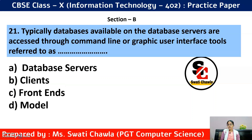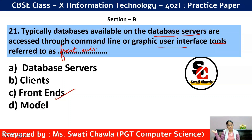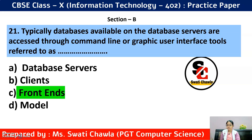Question 21: Databases available on database servers are accessed through command line or graphical user interface tools referred to as front ends. Database servers are powerful computers that can store large amounts of data. There is a back end — where data is actually stored (like MySQL, CSV files) — and a front end where the actual working and programming part is done. The correct answer is option C — Front End.